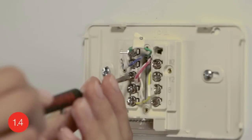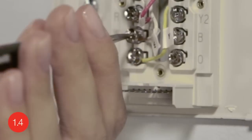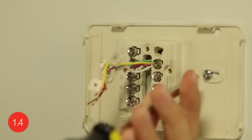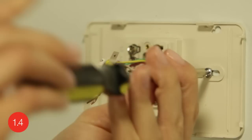After labeling your wires, use a screwdriver to loosen the terminals and pull the wires out. Now you can remove the wall plate of your old thermostat.